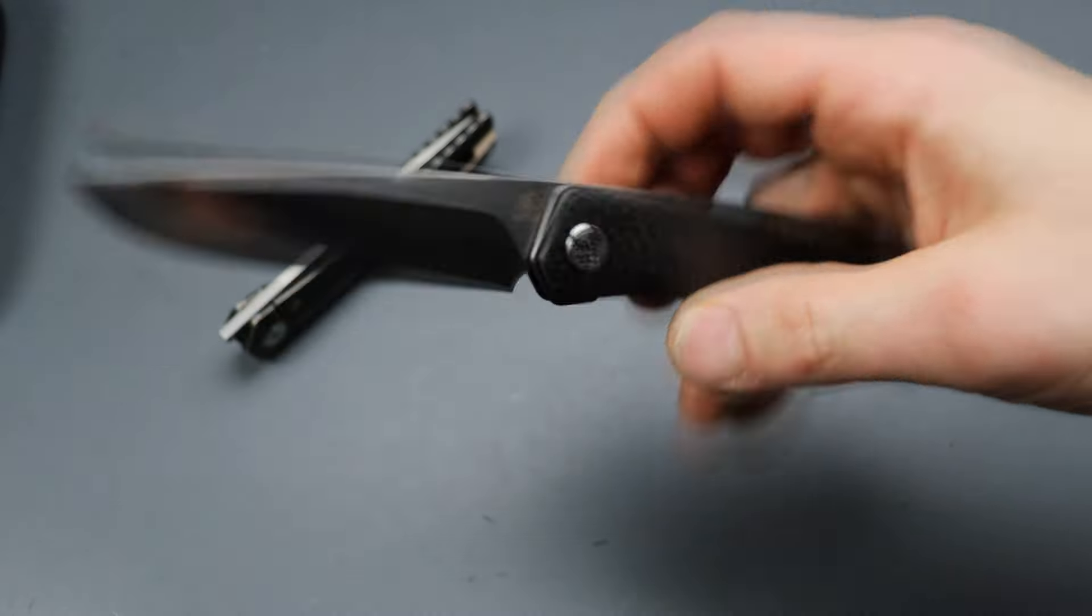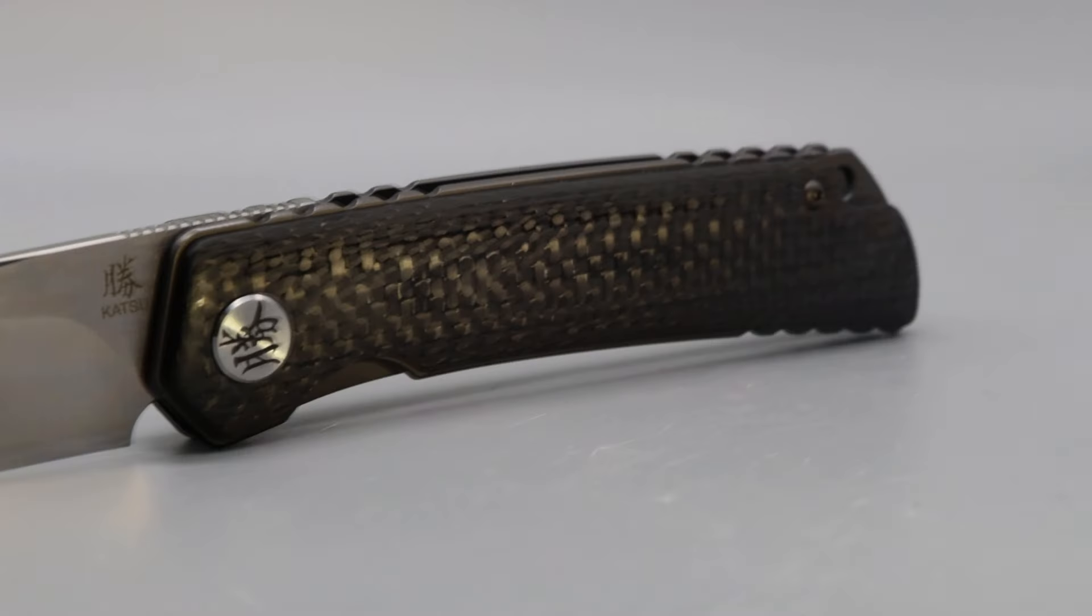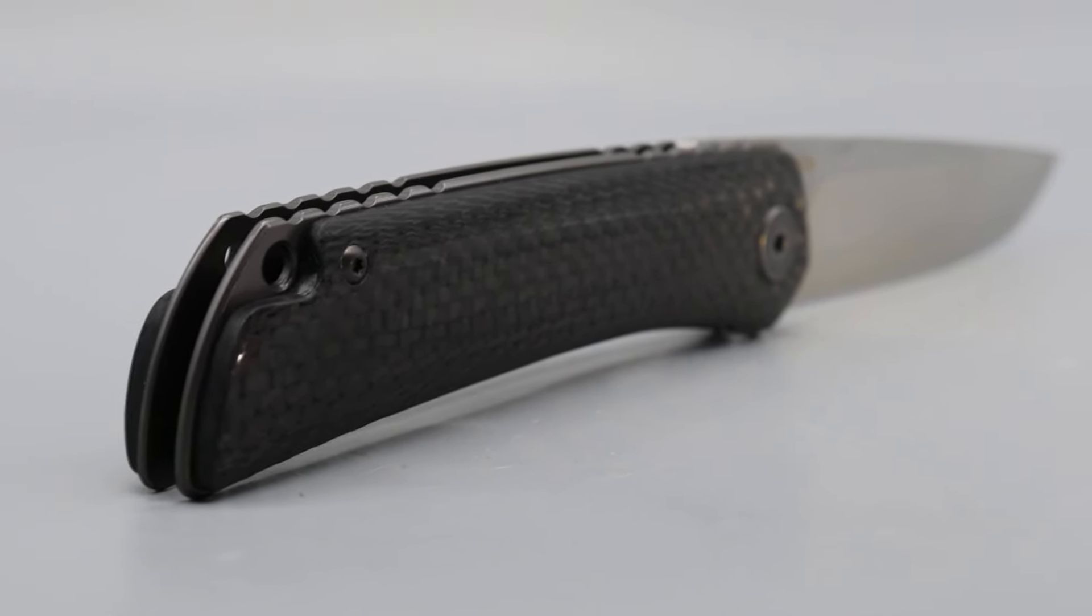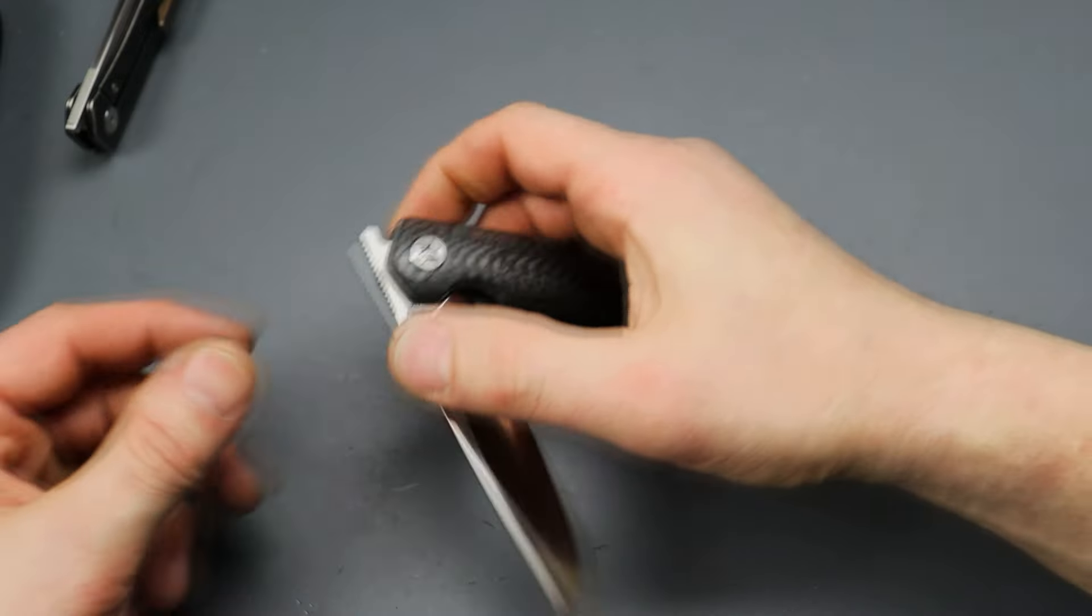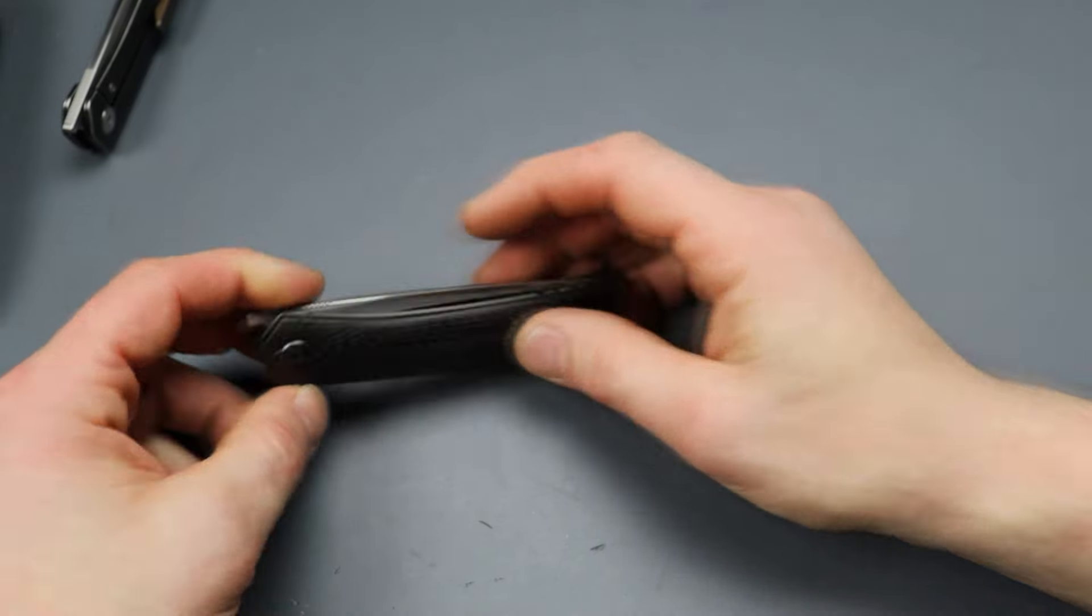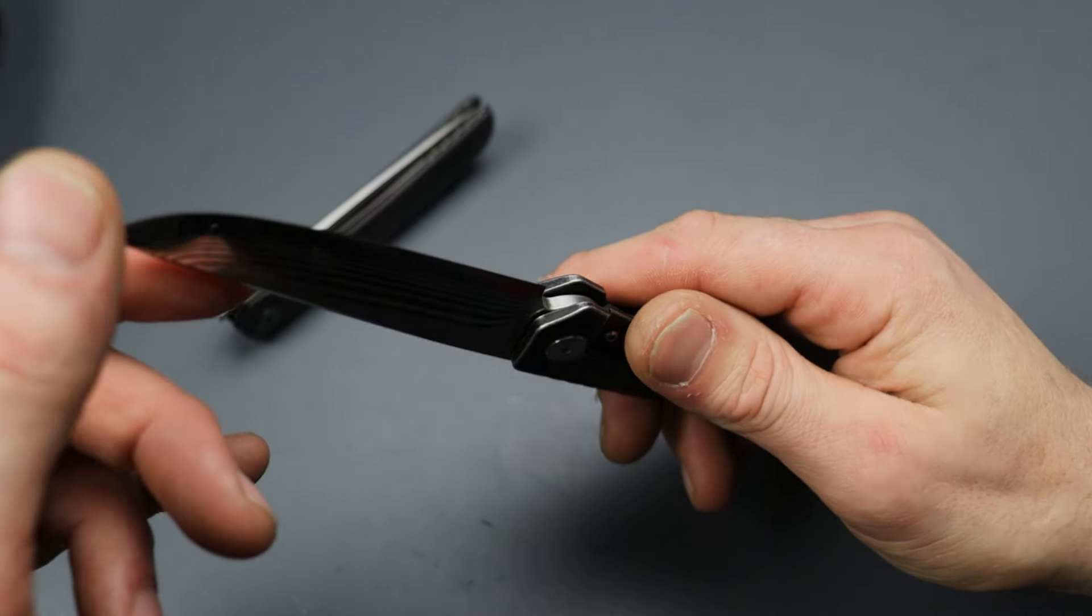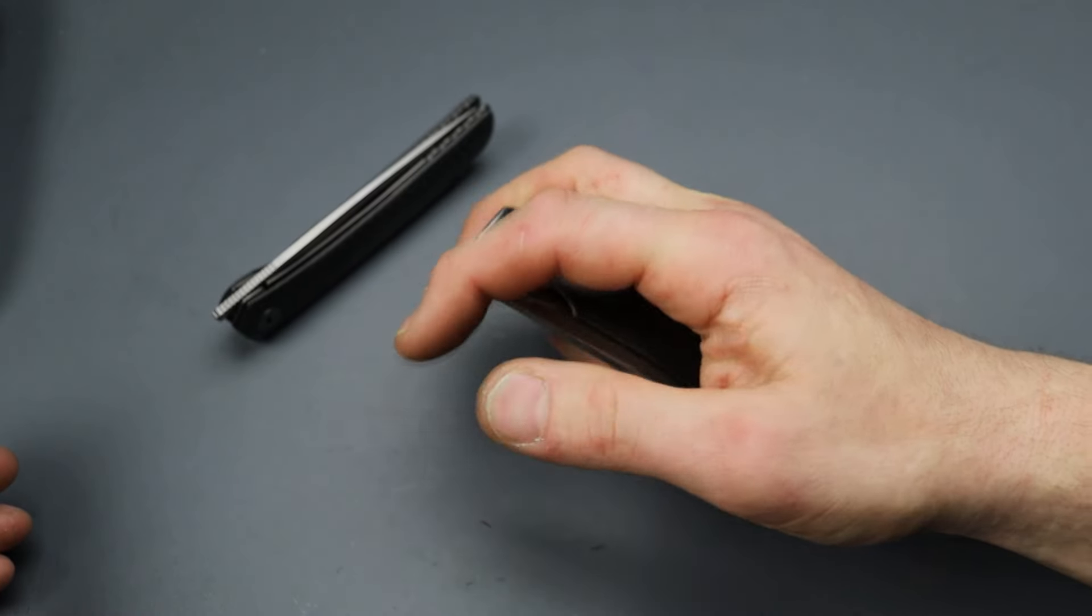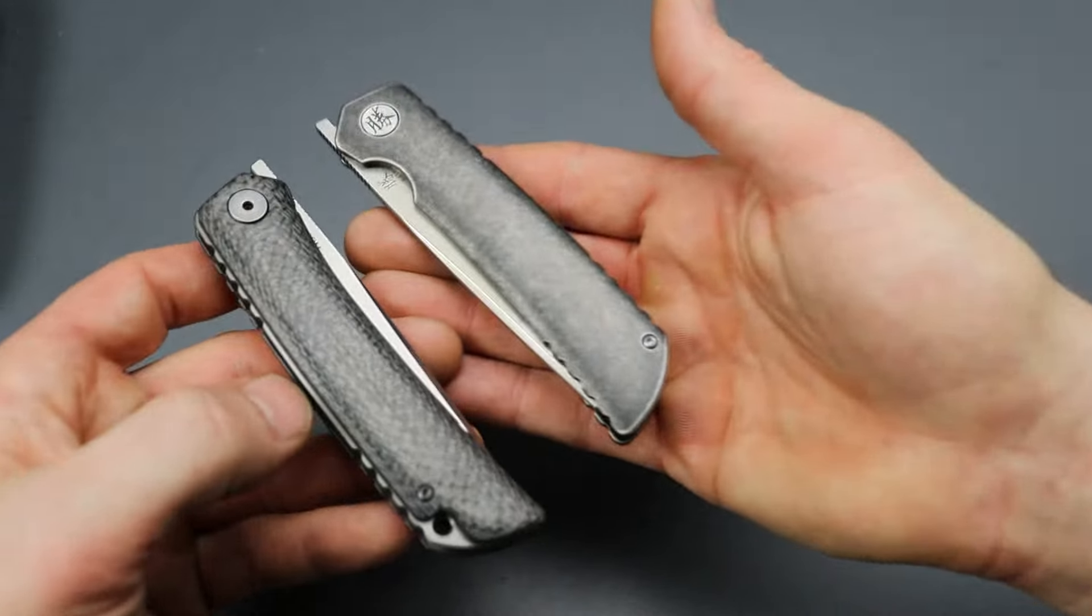This one is a more affordable version with beautiful polished carbon fiber and steel liners. Same deployment that works great, but this one has 154 CM steel and also a convex grind. The entire blade is going like this down to the edge and it does have a small edge bevel. It would be really cool if it was a zero grind, but it has basically a micro bevel. When you go to resharpen it, eventually you're going to have to cut in an edge bevel.